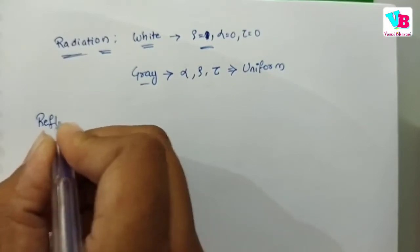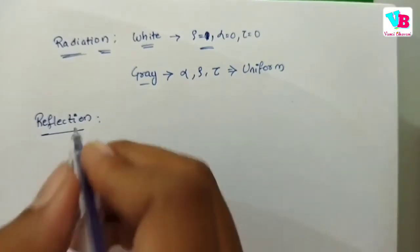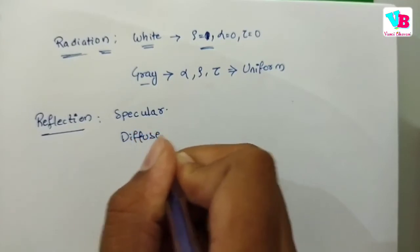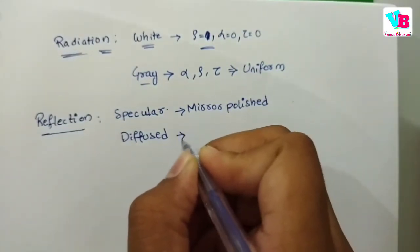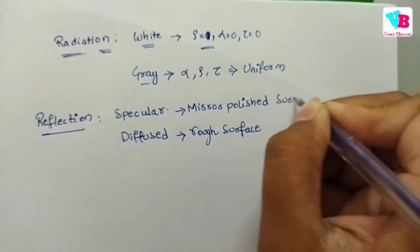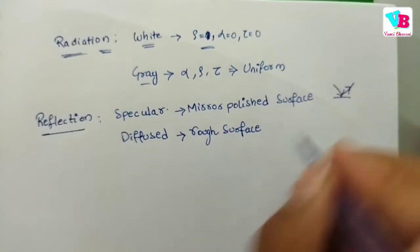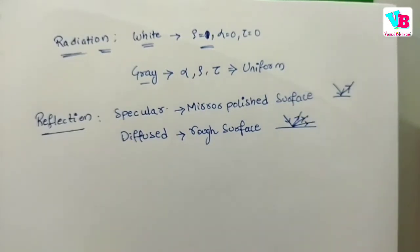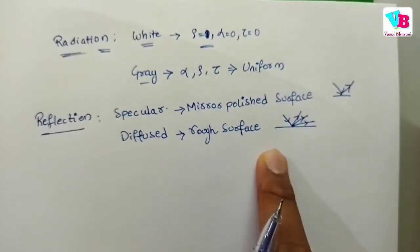Next is reflection. In reflection, we have two types: specular and diffused. Specular reflection occurs on mirror-polished surfaces. With specular reflection, one incident ray reflects in a single direction. With diffused reflection, many rays reflect in different directions. These are the different types of reflections.